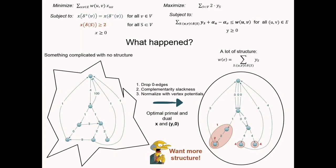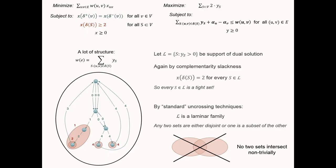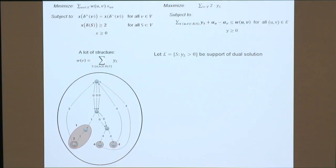Now we use the other direction of complementary slackness. Let L be the support of the dual solution — the set family with non-zero dual values. For any set in L, the primal constraint is tight: the flow across the cut in both directions is exactly 2. Furthermore, we can do uncrossing on this dual family, giving us an L that is laminar — no two sets intersect non-trivially.